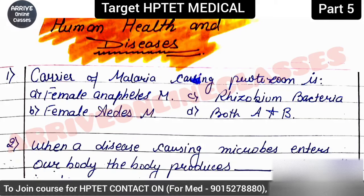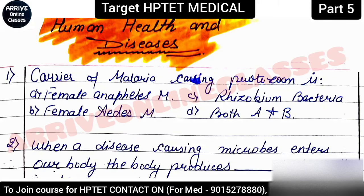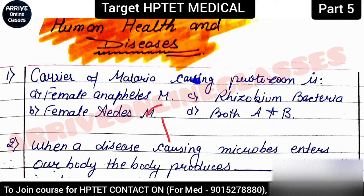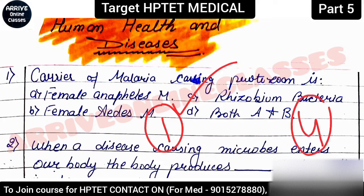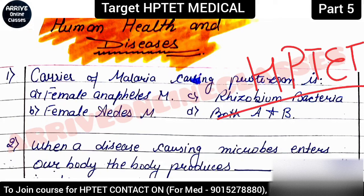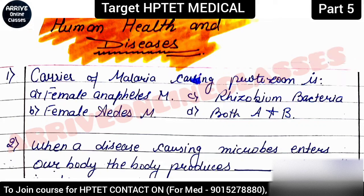Hello everyone, welcome to Arrive Online Classes. This is Praveen here. Today in this series we are going to complete the MCQs from Human Health and Diseases. In the previous videos of this series, we covered chapters 2, 3, 5, and 6, which are high-weightage chapters. Today our target is to complete the remaining high-weightage topics and concepts.